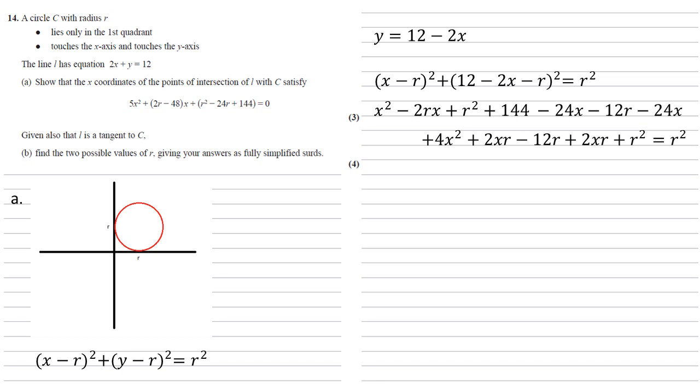If we now bring the like terms together and cancel one of our r squareds on the left with the r squared on the right, we get that 5x squared plus 2xr minus 48x plus r squared minus 24r plus 144 is equal to 0. Now the second and third terms there are both multiples of x, so let's factorize that out, which gives us 5x squared plus 2r minus 48 times x plus r squared minus 24r plus 144 equals 0 as required.